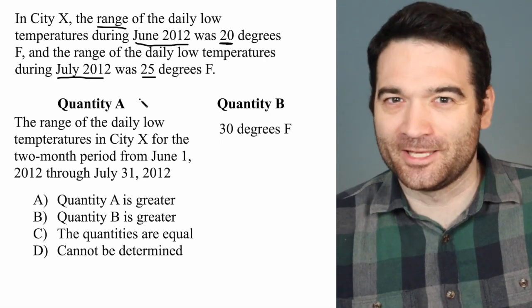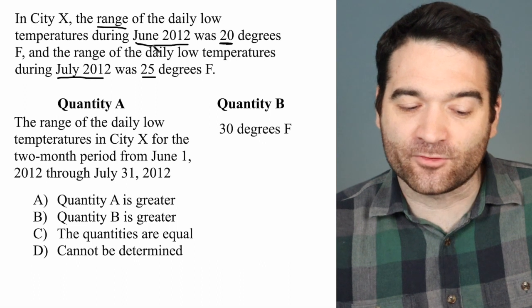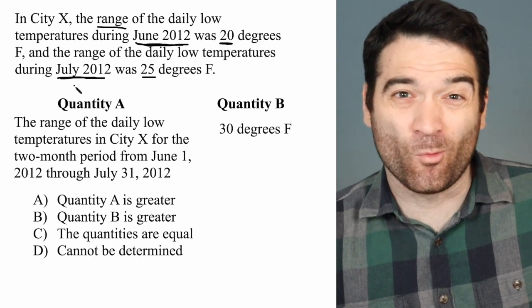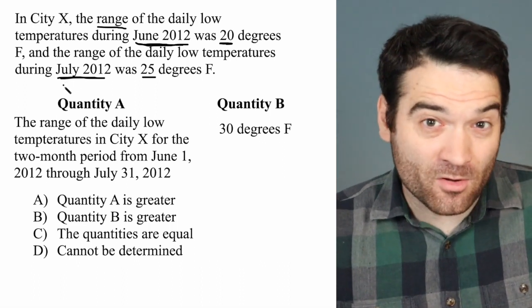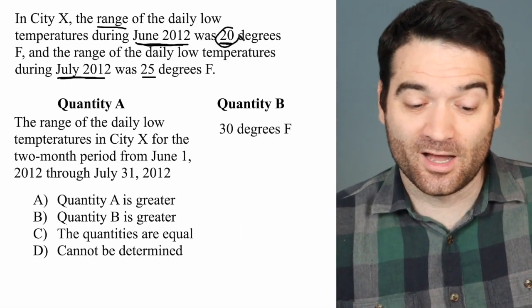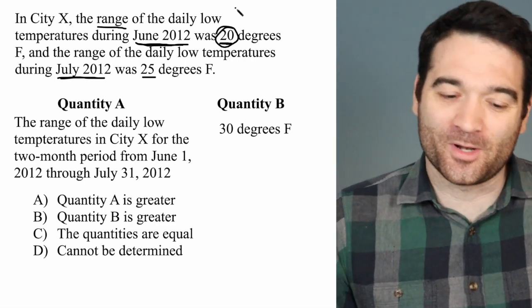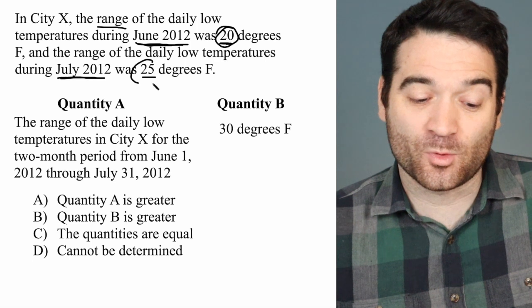Let me ask a question which might actually give away the answer here. Do we know how different the months of June and July were from each other? We don't. All we know is that within June, the temperatures ranged by 20 degrees—that is, the smallest to the largest was 20 degrees. And in July 2012, it was 25 degrees.